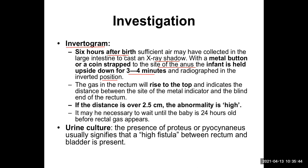Once the air casts an X-ray shadow, I put a small metal button or coin strapped to the point where the anal opening would exist, so I can see that shadow on the X-ray. Then I make the infant upside down so that whatever gas or air is in the large intestine moves up, and the distance between the coin and the shadow can be easily seen.